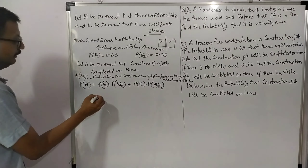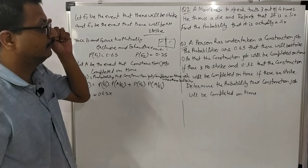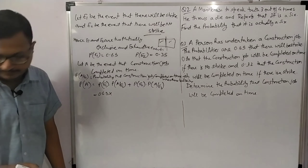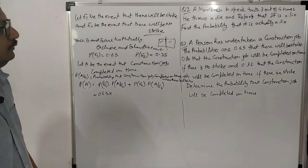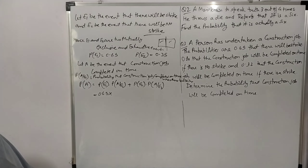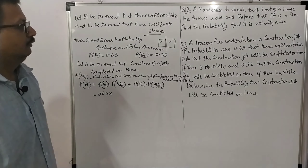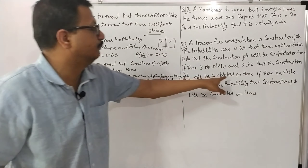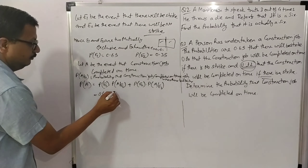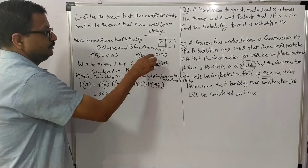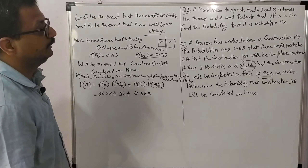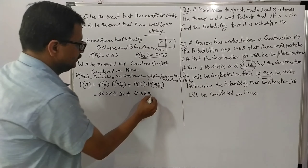P(A|E1) — when strike occurs, job completed on time — is 0.32, as given. P(A|E2) — when there is no strike, job completed on time — is 0.80. So P(A) = P(E1)·P(A|E1) + P(E2)·P(A|E2) = 0.65 × 0.32 + 0.35 × 0.80.